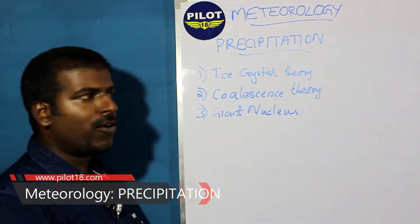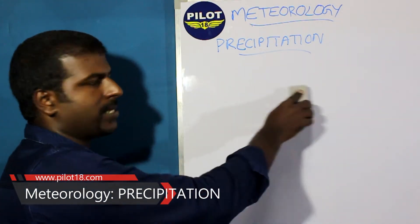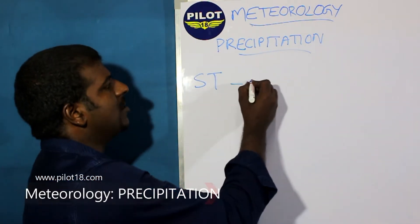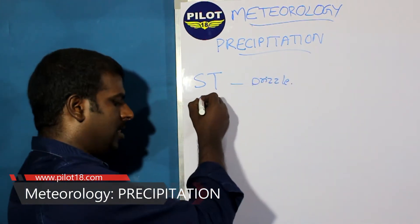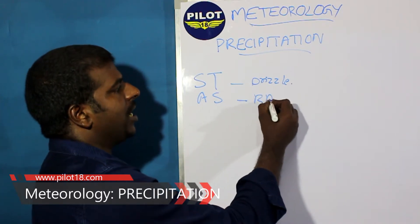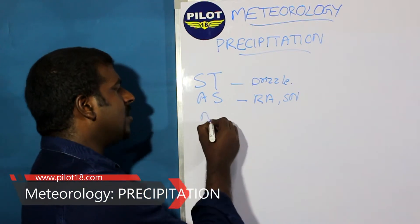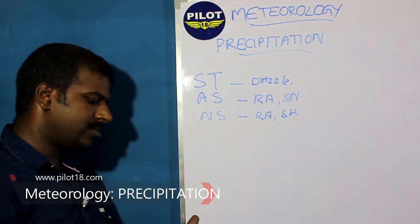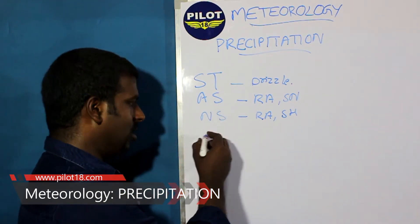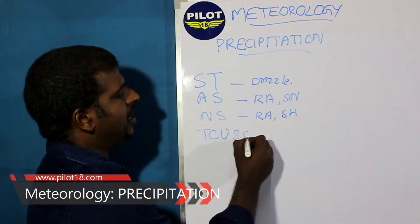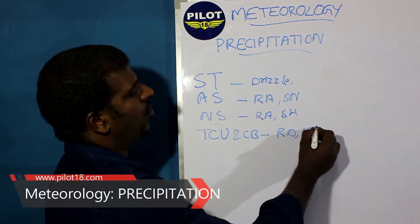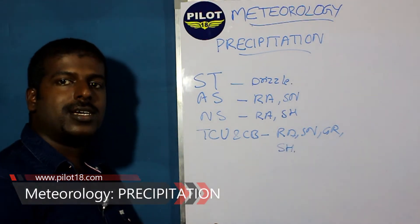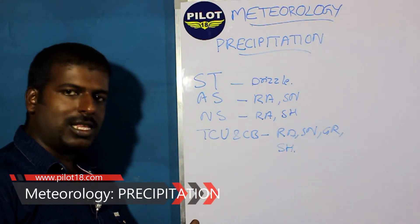Not all clouds give the same type of precipitation. Stratus clouds usually give drizzle. Altostratus clouds give rain and snow. Nimbostratus clouds are the most important — they give continuous rain and shower. Towering cumulus and cumulonimbus clouds can give rain, snow, hail, and shower. Everything can be expected from towering cumulus and CB clouds.